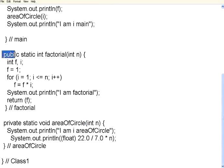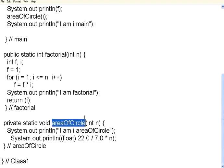Public methods are accessible by other methods and other classes with no restrictions. Private methods can be accessed only by another method within the same class — you cannot call a private method from another class. Whereas in C, anybody can access any function; here there is a restriction. Only public methods are accessible from outside, and private methods are not.